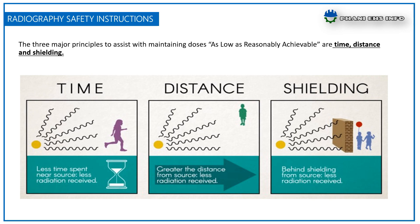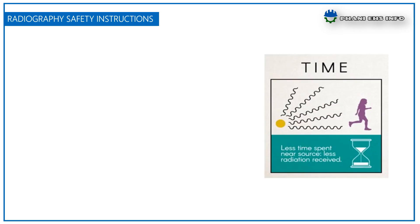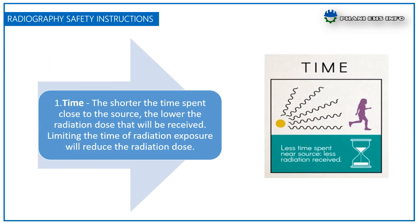The first principle of radiation protection is time. A shorter time spent close to the source, the lower the radiation dose that will be received. Limiting the time of radiation exposure will reduce the radiation dose, which means less time spent near the source means less radiation received.